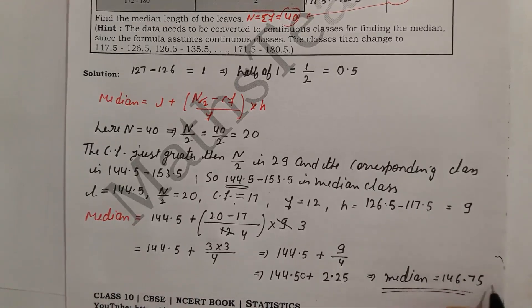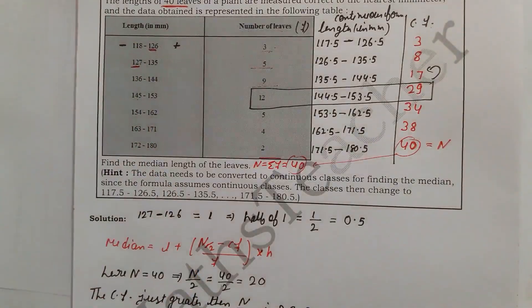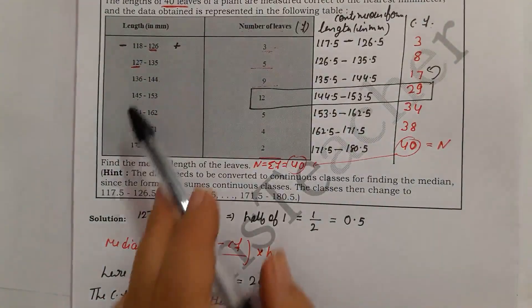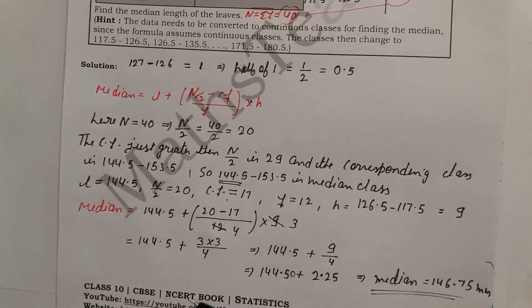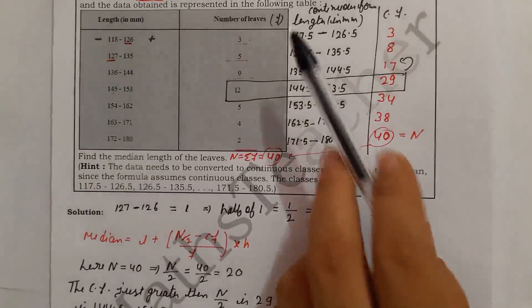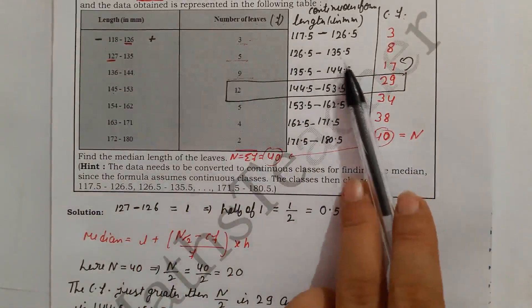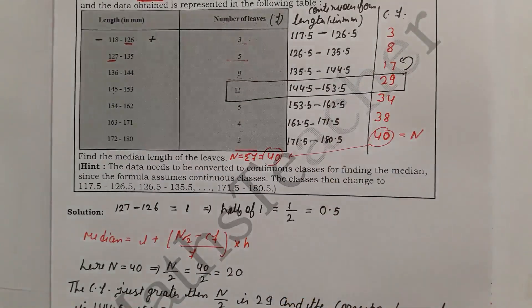So the median length of the leaves is 146.75 mm. The class interval should always be in continuous form when solving such problems. I hope you understood the question. If you have any doubts, please comment in the box. Thank you.